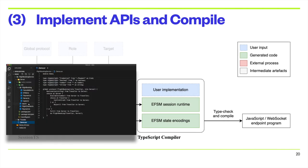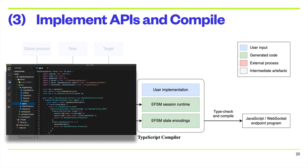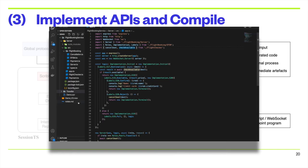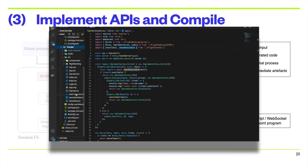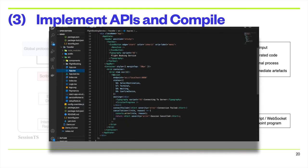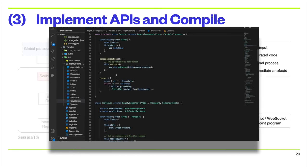Finally, the developer implements the endpoint application using the generated APIs. Here, the developer specifies how to handle flight quotes submitted by the traveler and what responses to send. Upon type checking, the TypeScript compiler generates a JavaScript application guaranteed to conform to the EFSM. The developer performs the same steps to implement the traveler front-end application and obtains an implementation of the flight booking service protocol that is guaranteed to be free from deadlocks and communication mismatches.